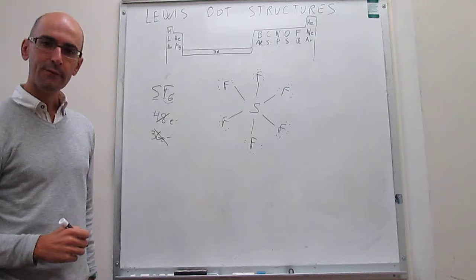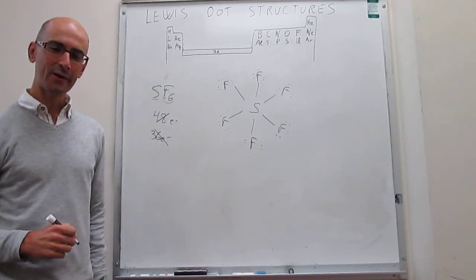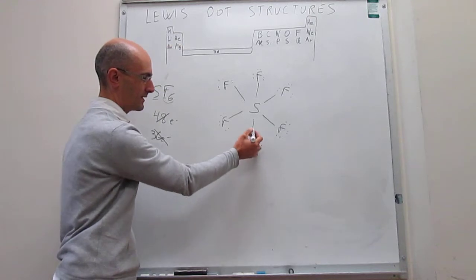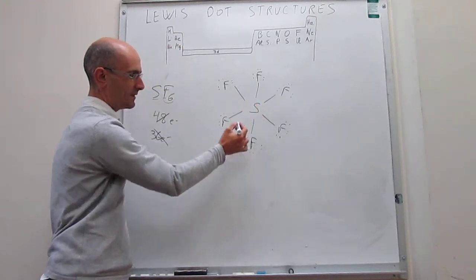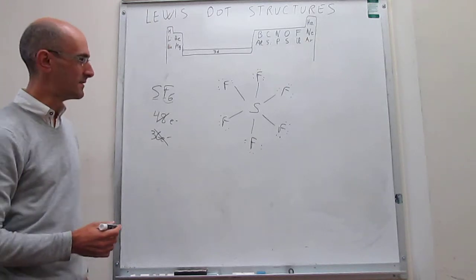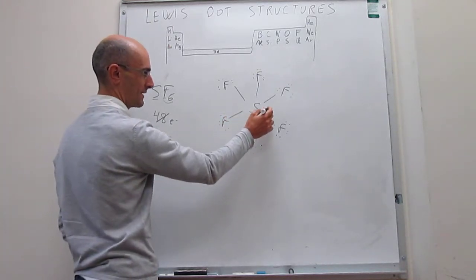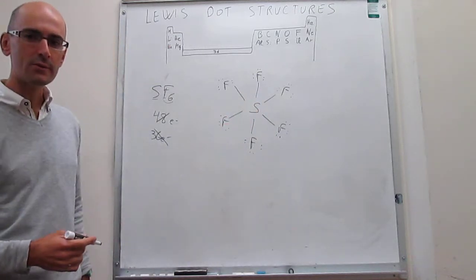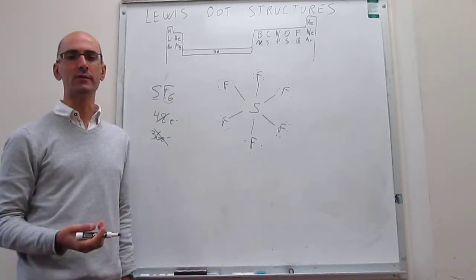Now we check and see if we have octets around each one of the atoms, and clearly for the fluorines we have octets, so 2, 4, 6, and 8. But when we take a look at the sulfur atom, you have clearly more than an octet. You actually have 2, 4, 6, 8, 10, 12, right? 12 electrons around the sulfur atom, that's a clear violation of the octet rule.